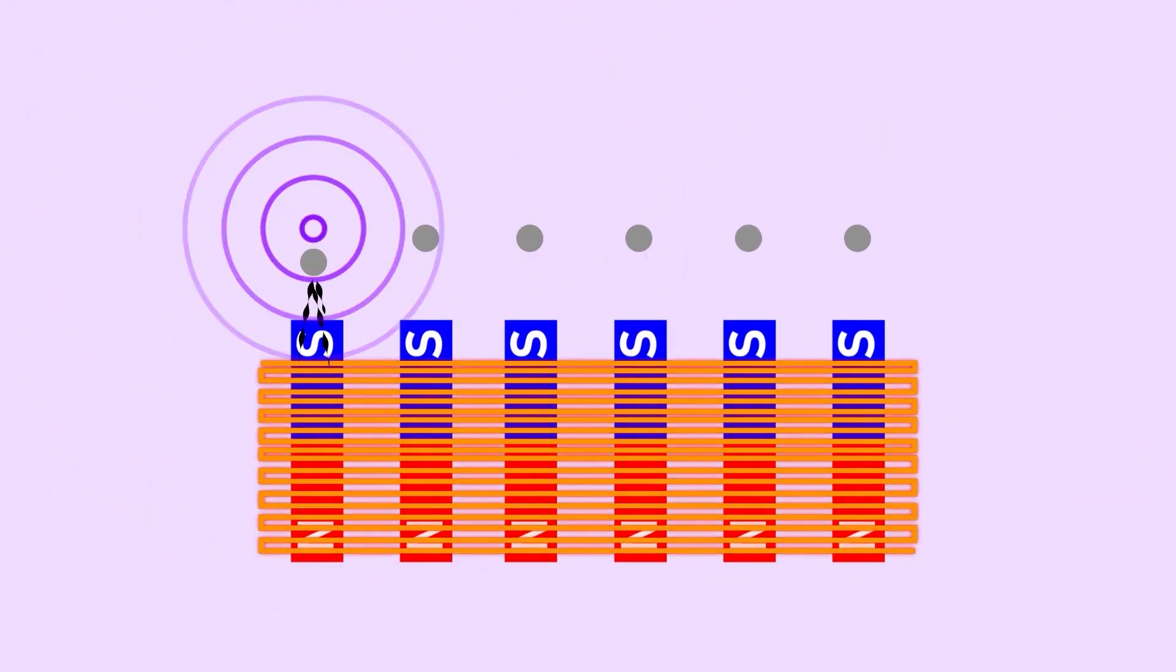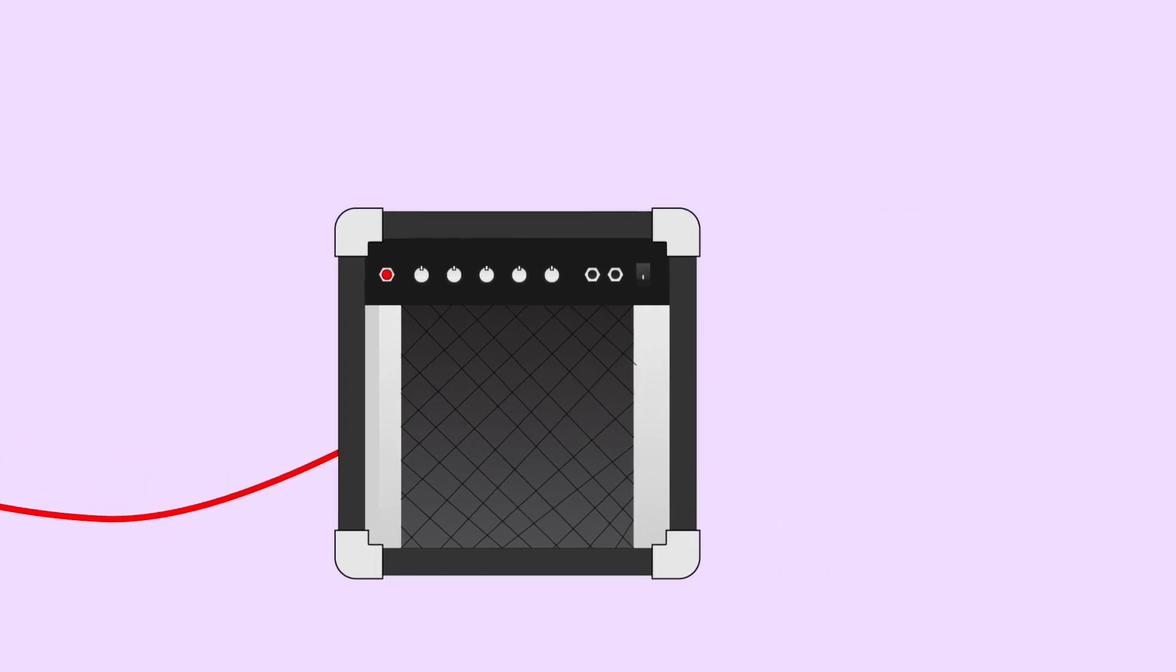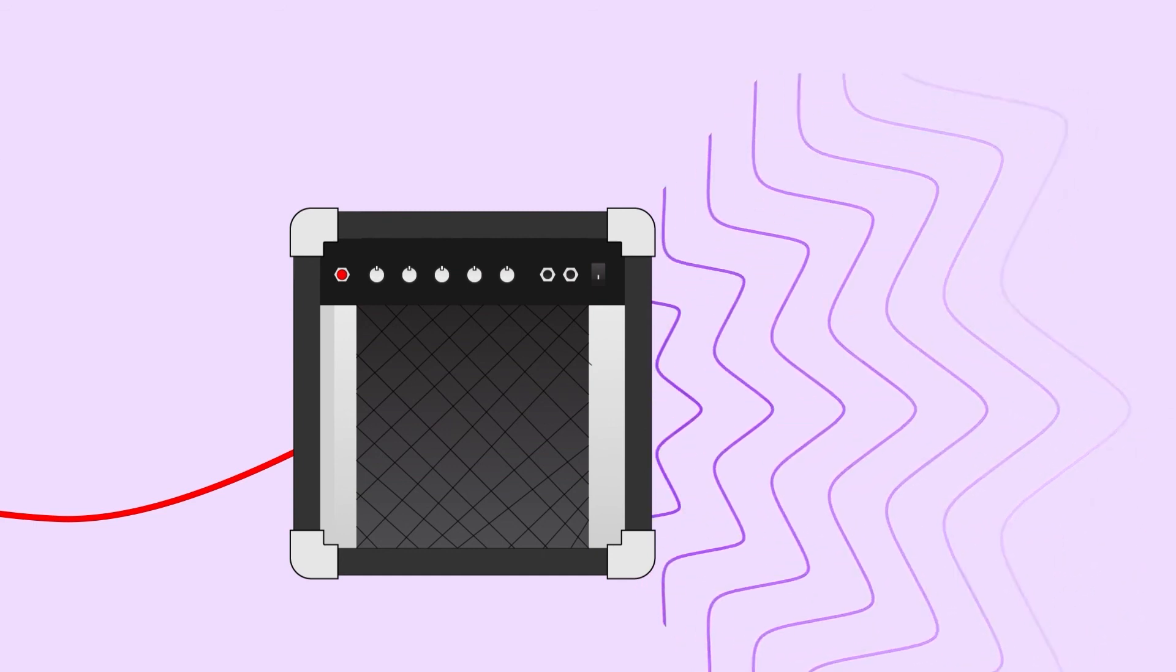By Faraday's Law, this creates an electric current. This current is sent through a chord and into an amp where it's converted back into the sound of a guitar string being plucked, or just as often, distorted into something totally different.